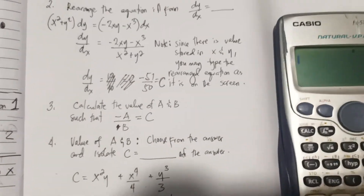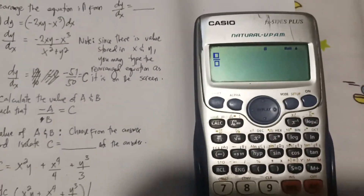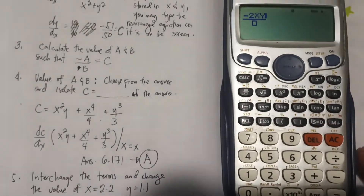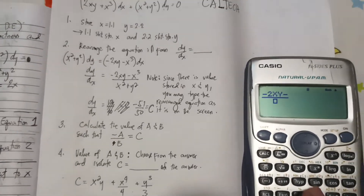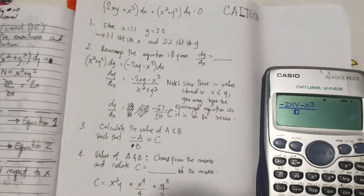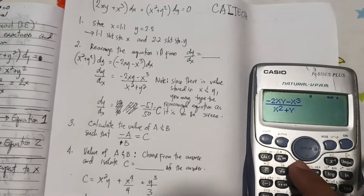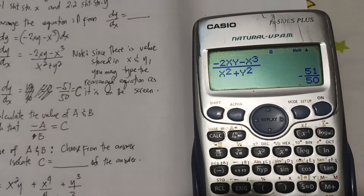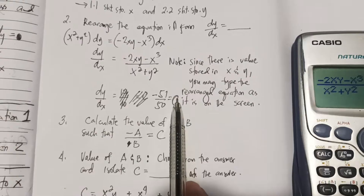Type the fraction: negative 2·alpha(x)·alpha(y) minus alpha(x)³, over x² + y², that is alpha(x)² + alpha(y)². The answer is negative 51 over 50. Designate this as the value of c.